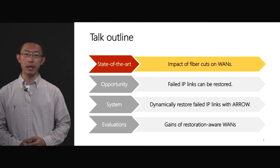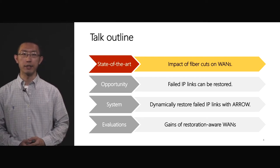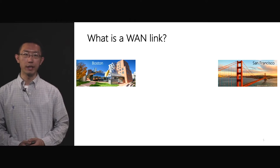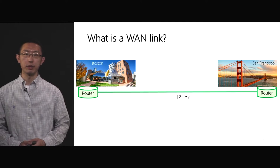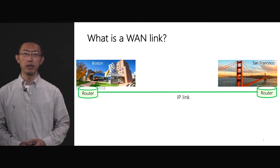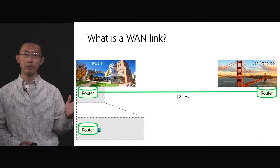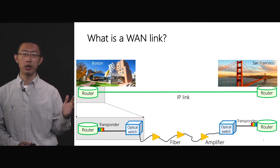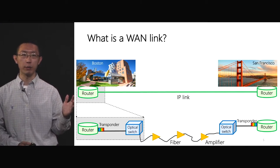Let me start with the impact of fiber cuts on WANs. How are optical fibers related to WAN links? What is a WAN link? Let me give a simplified example. Assume that we have an IP link between Boston and San Francisco. The IP link can transmit data between router ports. If we zoom into one end of the IP link, we see that right after the router ports, there is a device called optical transponder that converts the signal from electrical domain to optical wavelengths.